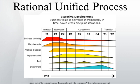Elaboration Phase: The primary objective is to mitigate the key risk items identified by analysis up to the end of this phase. This is where the project starts to take shape, with problem domain analysis performed and the architecture taking its basic form. The outcome includes: a use case model at least 80% complete, a description of the software architecture, an executable architecture realizing architecturally significant use cases, a revised business case and risk list, and a development plan for the overall project.